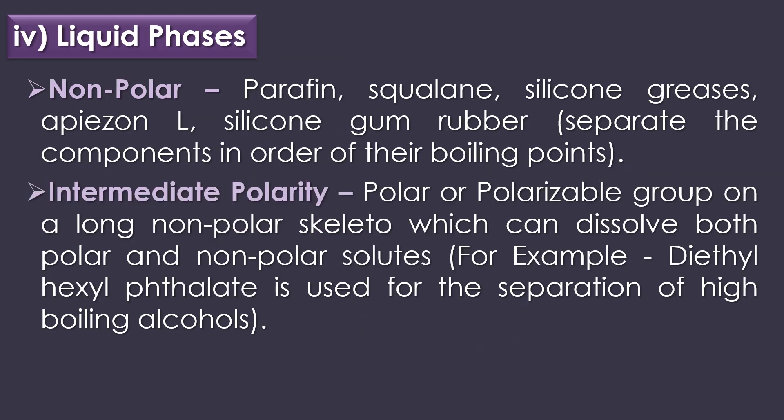The fourth part of gas chromatography is liquid phases. An infinite variety of liquid phases are available, limited only by their volatility, thermal stability, and ability to wet the support. The first liquid phase is non-polar, including paraffin, squalene, silicon greases, and silicon gum rubber — these separate compounds in order of their boiling point. The second is intermediate polarity, containing a polar group on a long non-polar skeleton that can dissolve both polar and non-polar solutes; for example, diethyl hexyl phthalate is used for separation of high boiling alcohols.